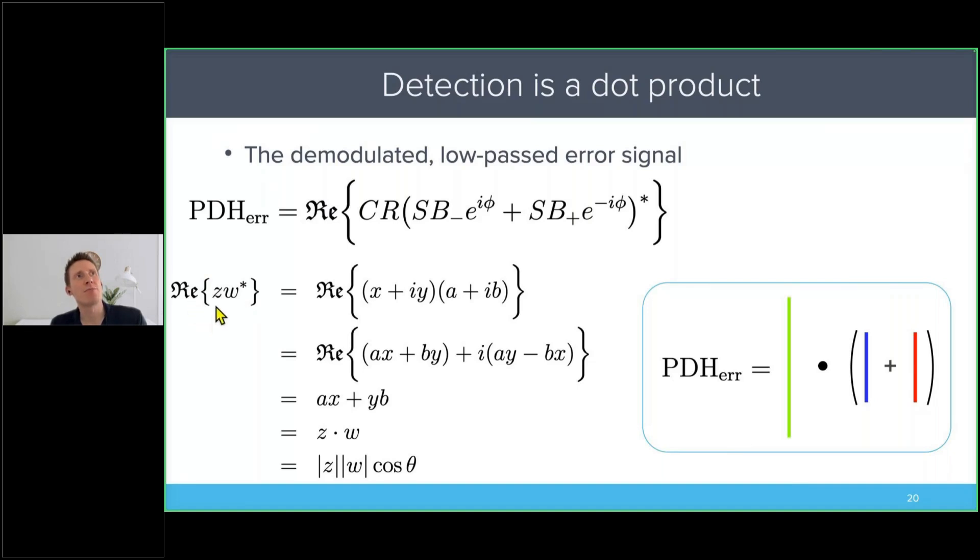The real part of a complex number times complex number conjugated—it turns out if you run through everything, that is actually the dot product of these two numbers. So the real part of z times w conjugated is z dot w.